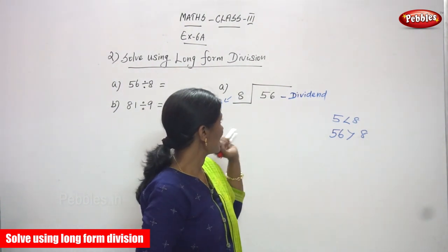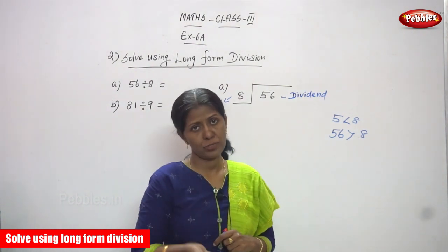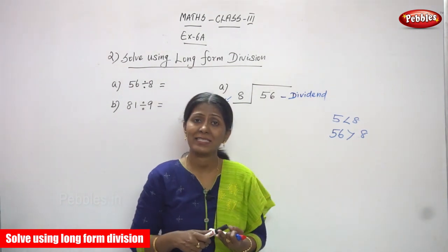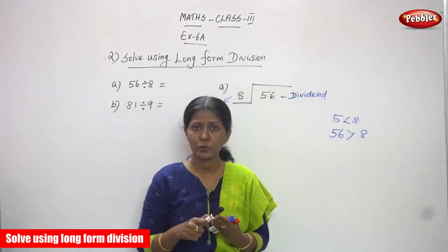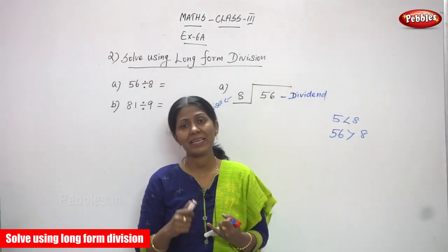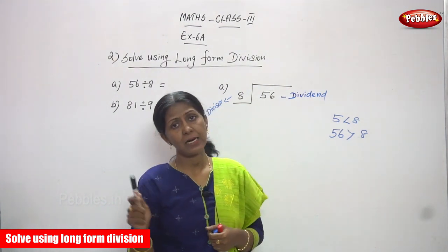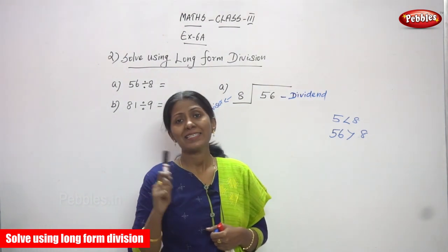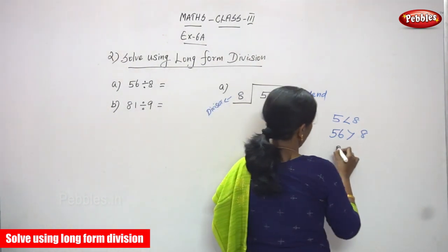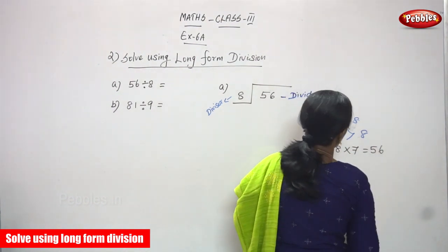You must say the 8th table. 8 ones are 8. 8 twos are 16. 8 threes are 24. 8 fours are 32. 8 fives are 40. 8 sixes are 48. 8 sevens are 56.